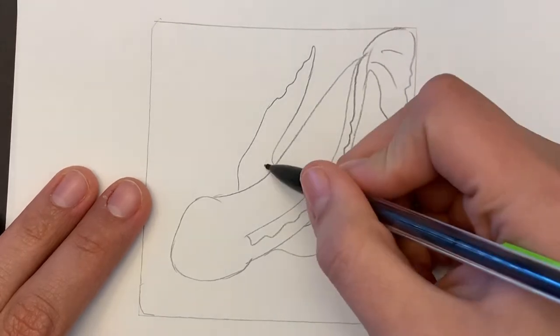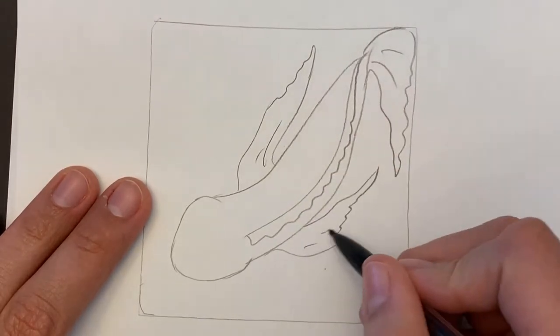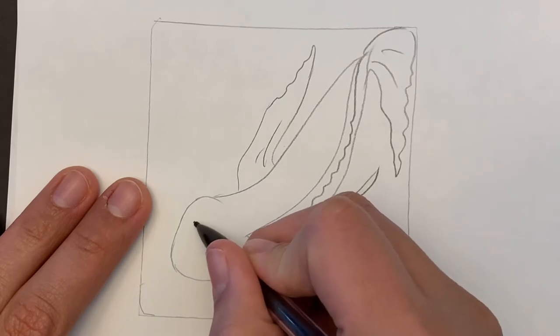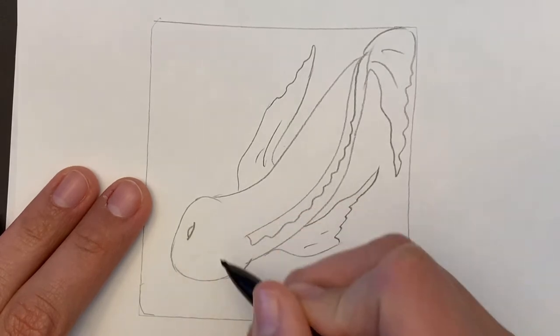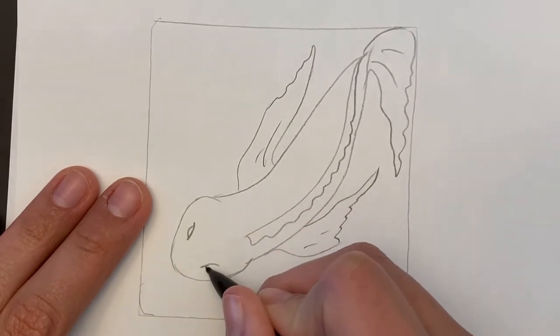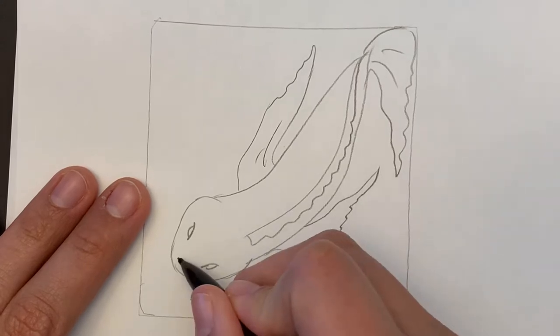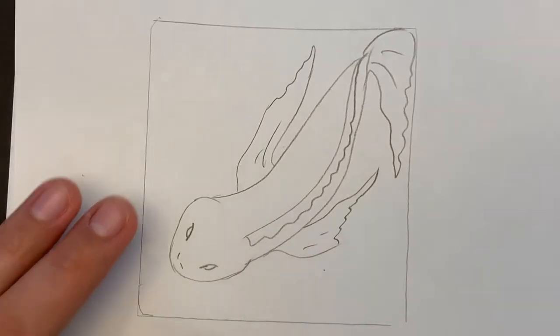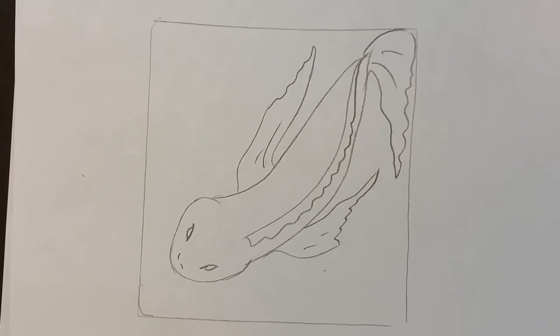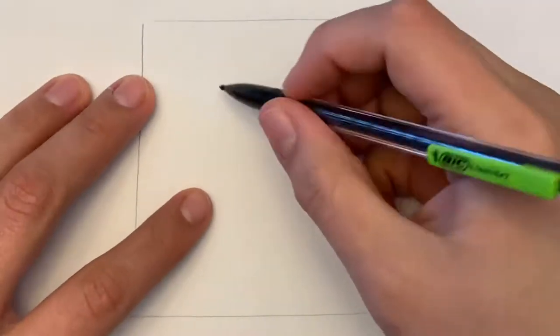I kind of just drew it as if it was being cut off by the frame. With the eyes I kind of just do like little circly, ovally eyes with little nose. That's me doing my first koi fish.